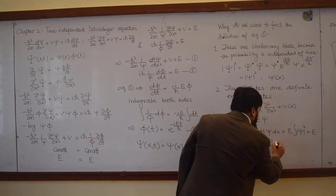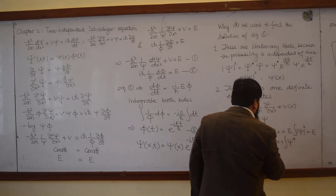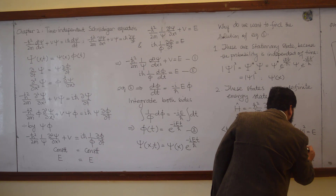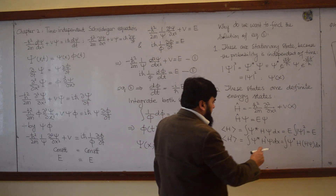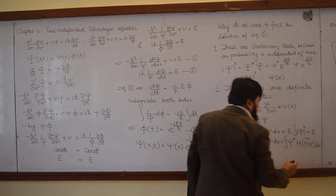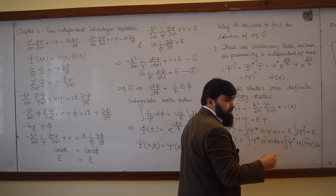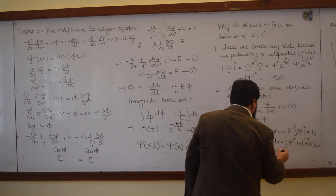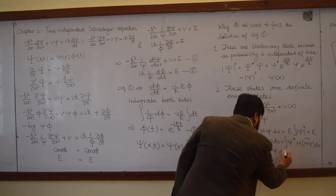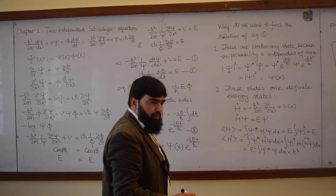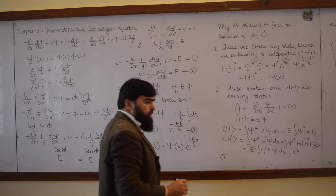If I find ⟨H²⟩, I write ∫ψ* H² ψ dx = ∫ψ* H(Hψ) dx. When H operates on ψ it gives Eψ, and then H operates again to give E·Eψ = E²ψ. So E² comes out, and ∫ψ*ψ dx = 1, giving ⟨H²⟩ = E².